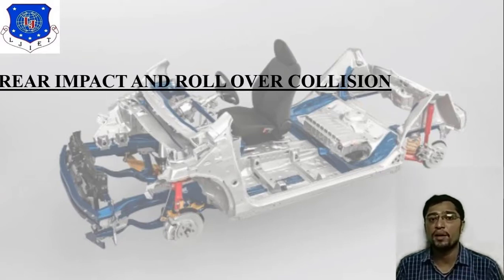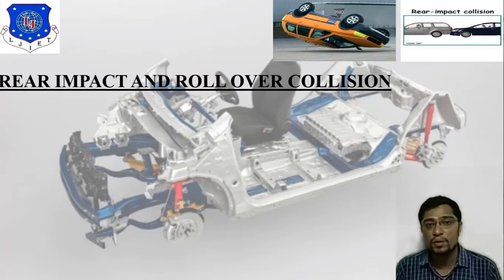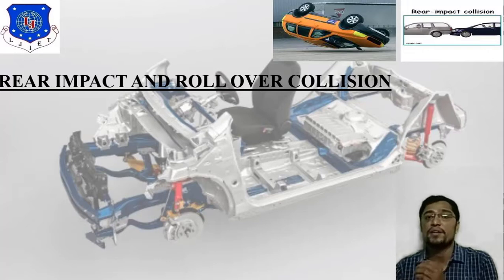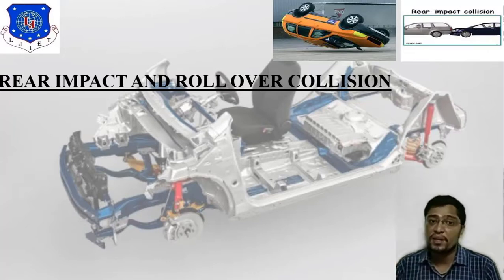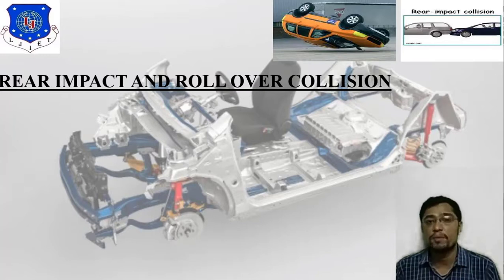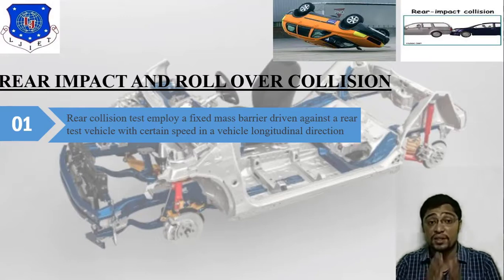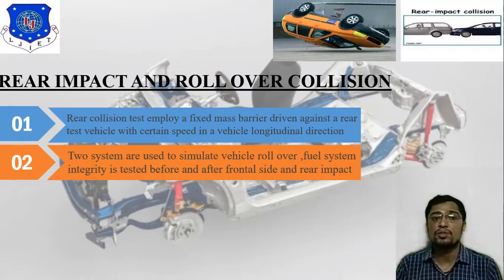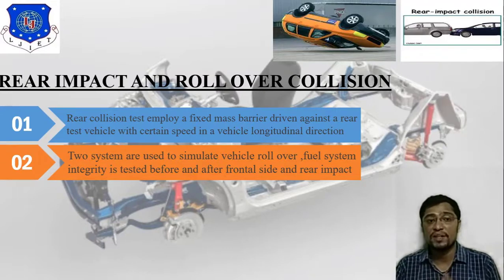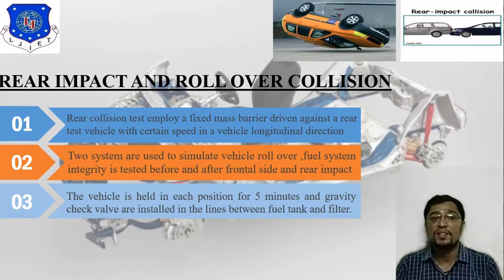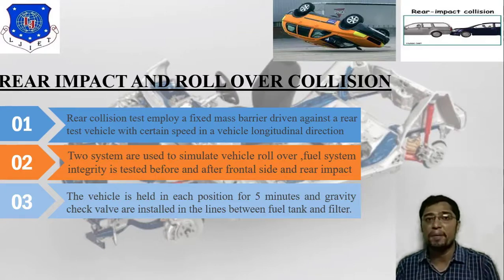Next is rear impact and rollover collision. In the first image you can find the rollover collision, and in the second image you can find the rear impact. Rear impact testing is done at the rear faces. The rear collision test employs a fixed mass barrier driven against the rear of the test vehicle at a certain speed in the vehicle's longitudinal direction. Two systems are used to simulate vehicle rollover. Fuel system integrity is tested before and after frontal, side, and rear impact. The vehicle is held in each position for five minutes, and gravity check valves are installed in the line between the fuel tank and filter.